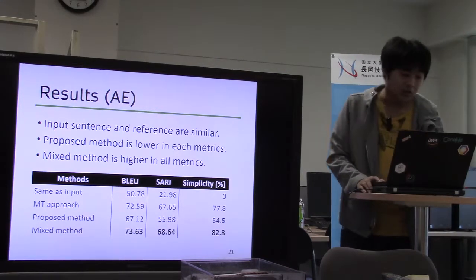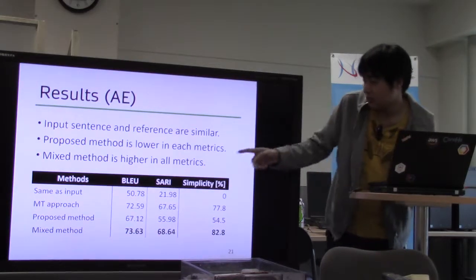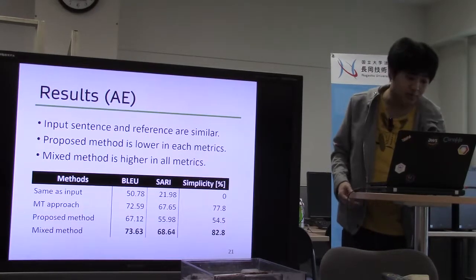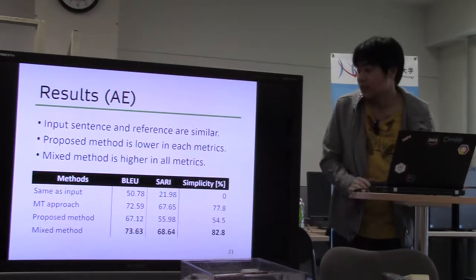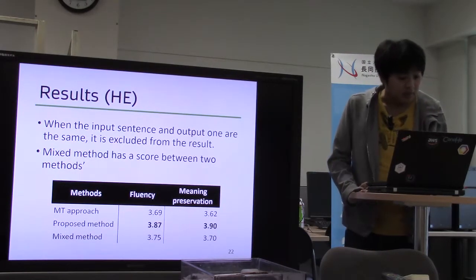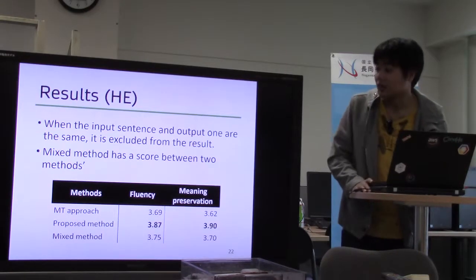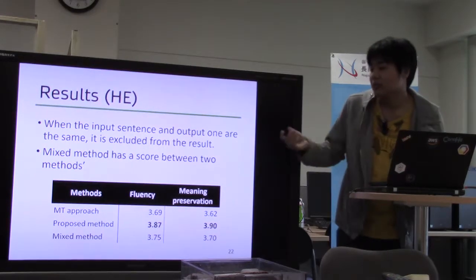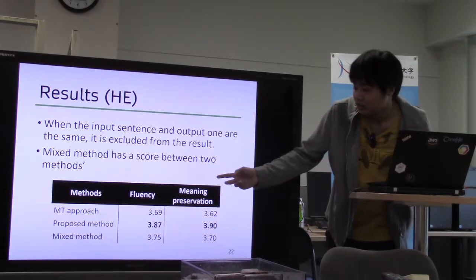This is the result of automatic evaluation. Since input and output sentences are similar, the method that copies the input has a high BLEU score. The proposed method scores lower on each metric, but the mixed method scores higher on all metrics. In human evaluation, the mixed method has a score between the machine translation approach and the proposed method.